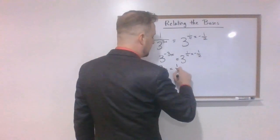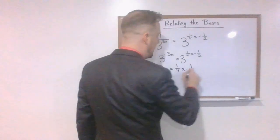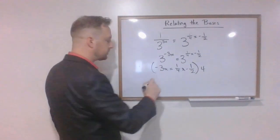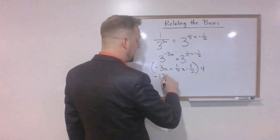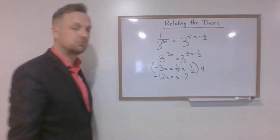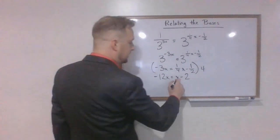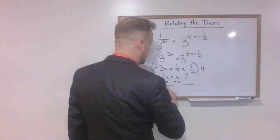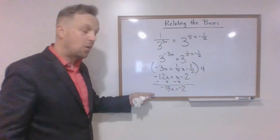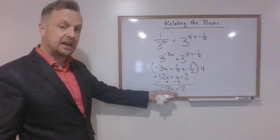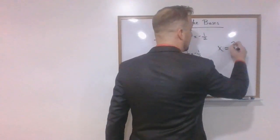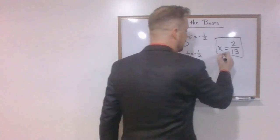Now we've got the bases the same, they are related, so we can then set the exponents equal to each other. Negative 3x equals one-fourth x minus one-half. We're going to multiply the whole thing by 4. That's going to give us negative 12x equals x minus 2. Subtract x from both sides, negative 13x equals negative 2. We're going to divide both sides by negative 13, and a negative divided by a negative equals a positive, so our final answer here is going to be x equals 2 over 13.